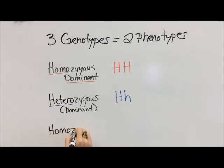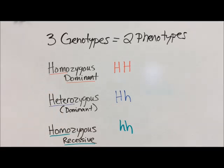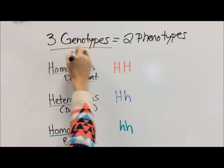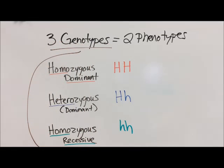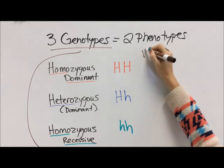And finally, we have homozygous recessive, which again we see same, recessive — so we have little H, little H, two of the same recessive alleles. These are the names of the genotypes. I know they look like really long words, but if you keep in mind that homo means same, hetero means different, and you know dominant versus recessive, they're really not that bad.